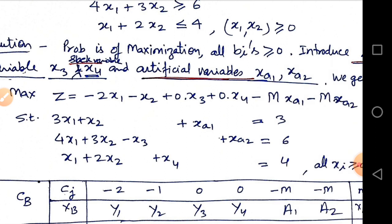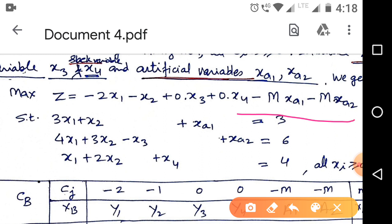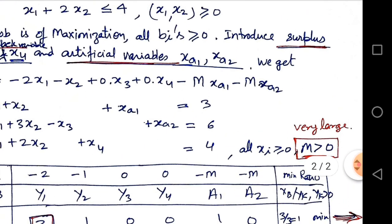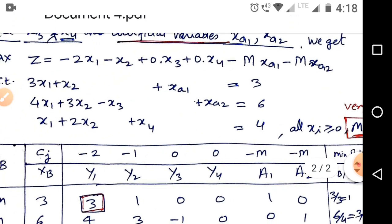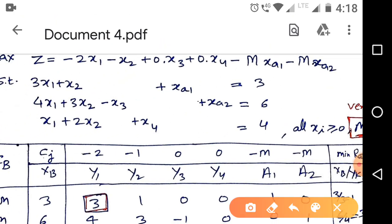So finally our problem is converted to this form: maximize Z equal to minus 2x1 minus x2 plus 0x3 plus 0x4 minus M xa1 minus M xa2, where M is a very large positive number. x3 is surplus variable, x4 is slack variable, and xa1 and xa2 are artificial variables.